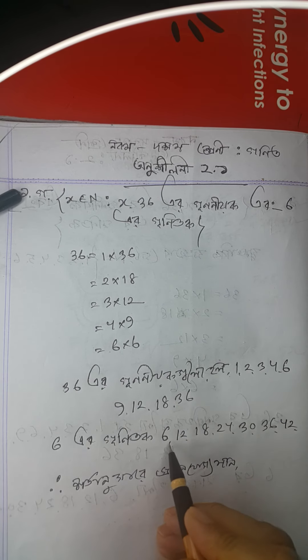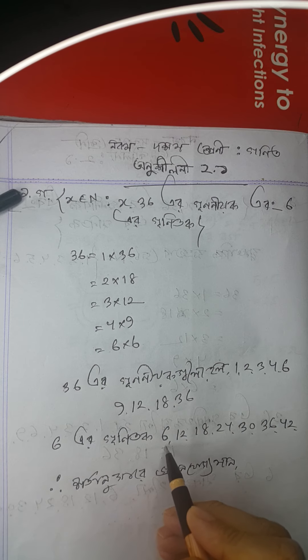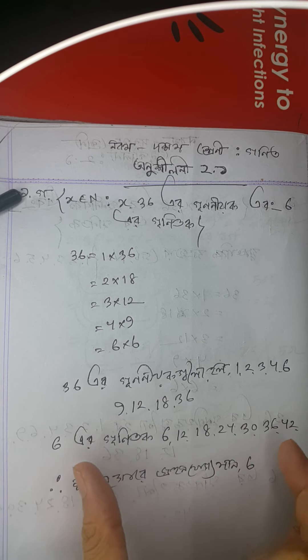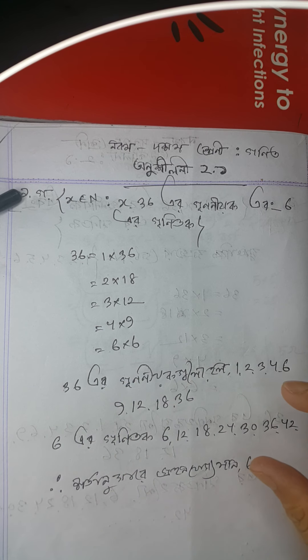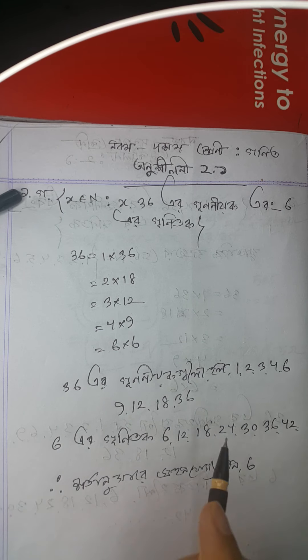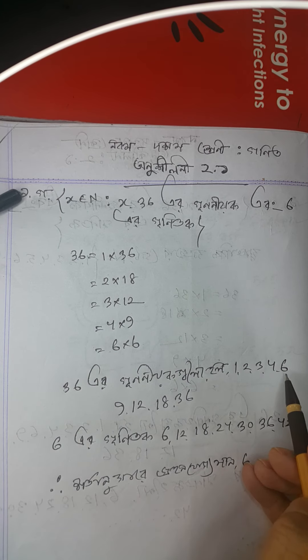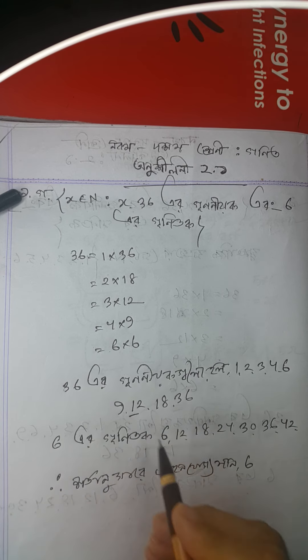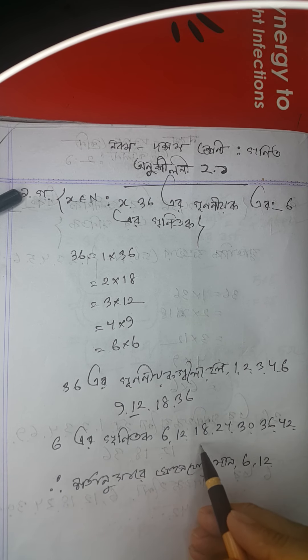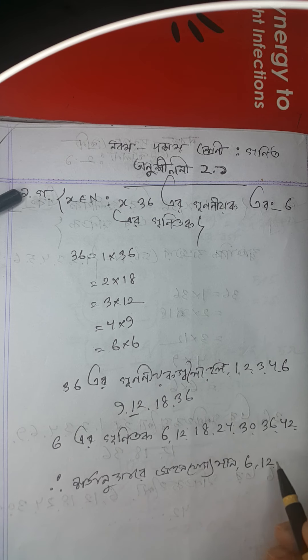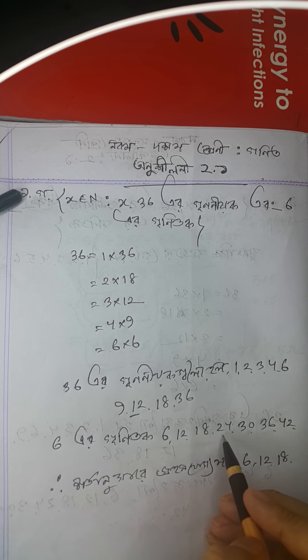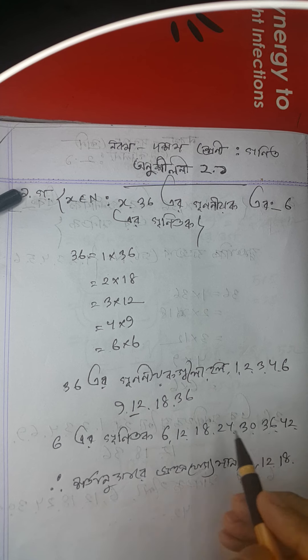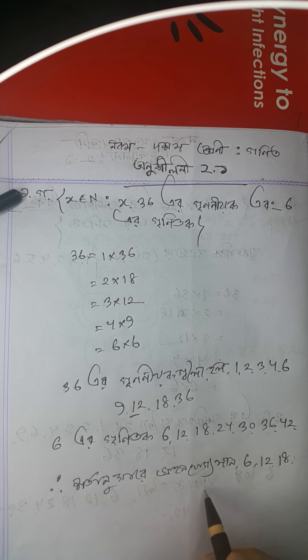From the factors of 36, we can see that 6 is a multiple of 6, 12 is a multiple of 6, 18 is a multiple of 6, and 36 is a multiple of 6. These are the numbers that satisfy both conditions.